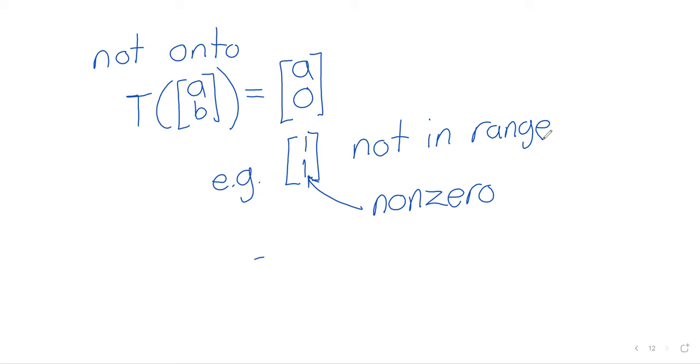As an example of a linear transformation that is not onto, we could look at the linear transformation from R^2 to R^2 that keeps the first component the same but turns the second component to zero. This is a linear transformation. It is linear. It's not onto. And the reason it's not onto is that, for example, the vector one, one is not in the range. Because the transformation turns every second component to zero. So any vector with a non-zero second component is not in the range.